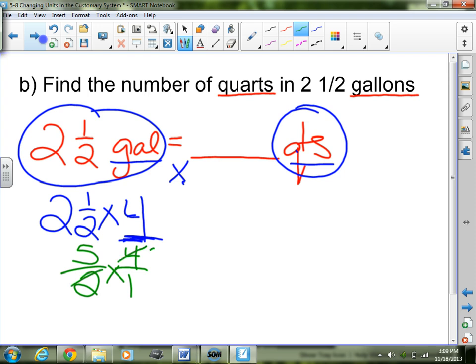Cross multiply, make it easier, both can divide by 2. 5 times 2 is 10, 1 times 1 is 1, 10 divided by 1 is 10. So that must mean that there are 10 quarts in 2 and a half gallons.